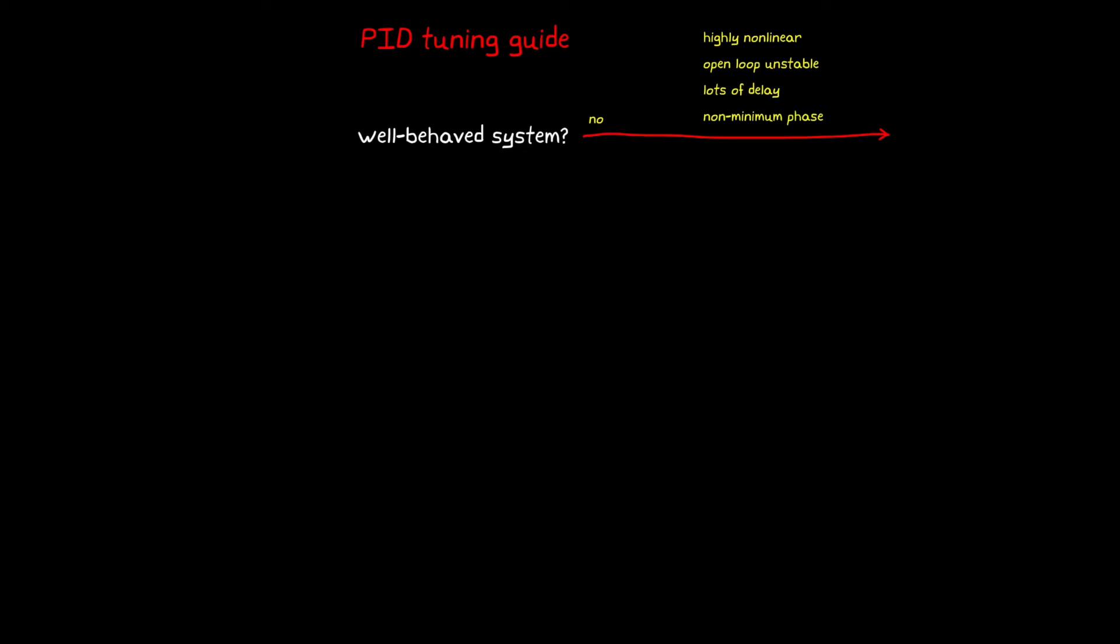In each of these cases, typical PID tuning approaches may work, but it's likely the system requires more advanced tuning methods or control architectures. For the remainder of this flowchart, we're going to focus on well-behaved systems.